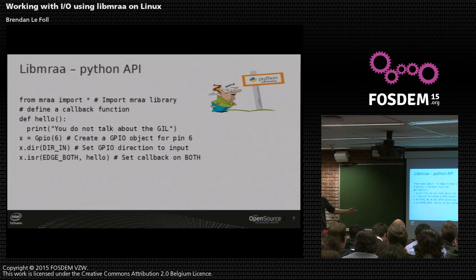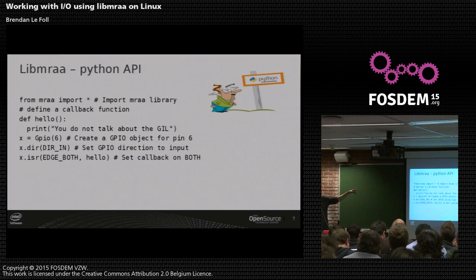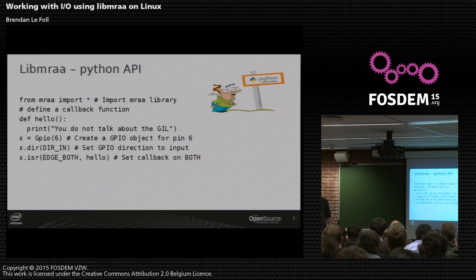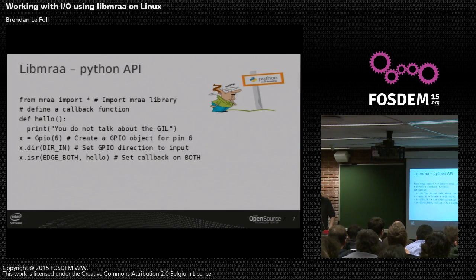We can do interrupts as well. This is how you do an interrupt from Python — it's quite easy to do and works quite well. You just define a callback function. Everything in your callback function has to be an object because of the weird way Python does stuff. You just request a GPIO, say what edge you want to set your interrupt routine on, and you just set it. You can unset it, clean it up. It's really pretty easy to program — it's what people expect from IO stuff these days.